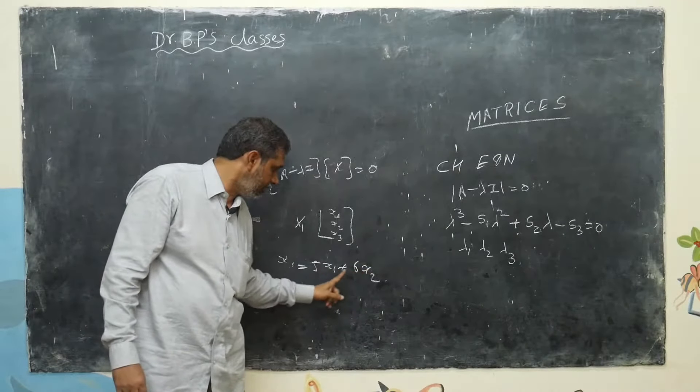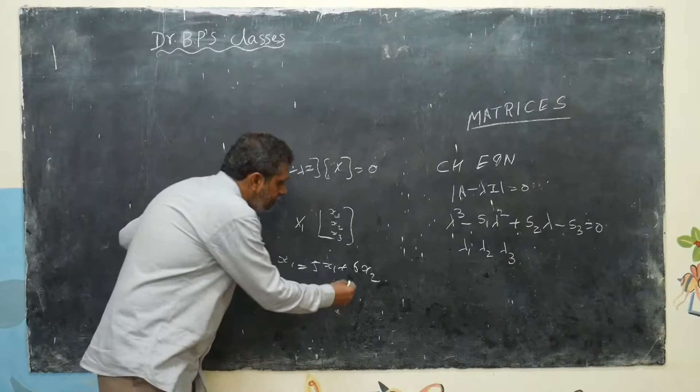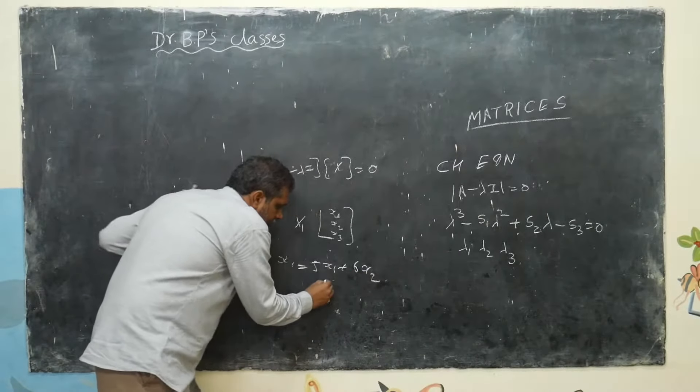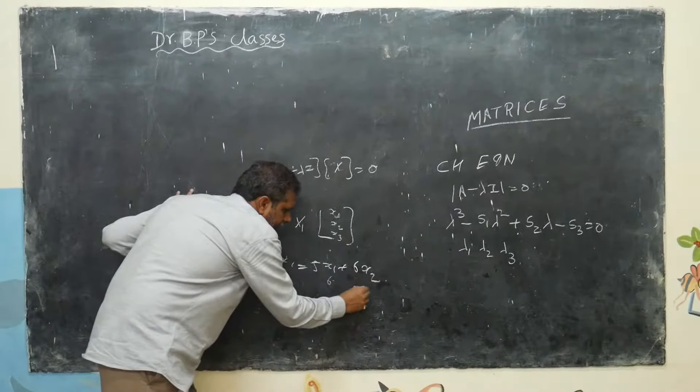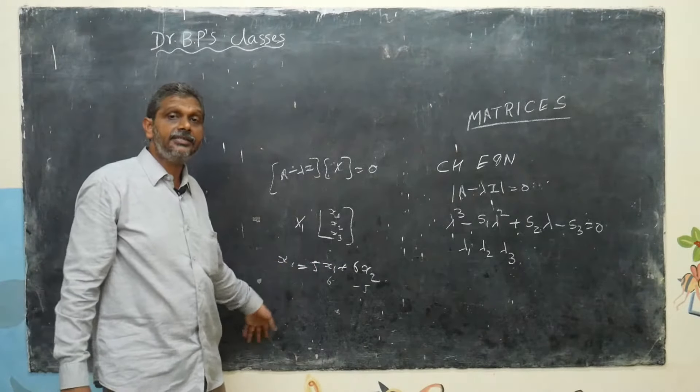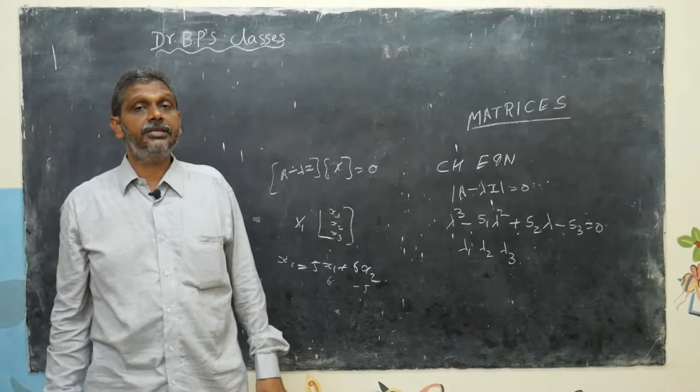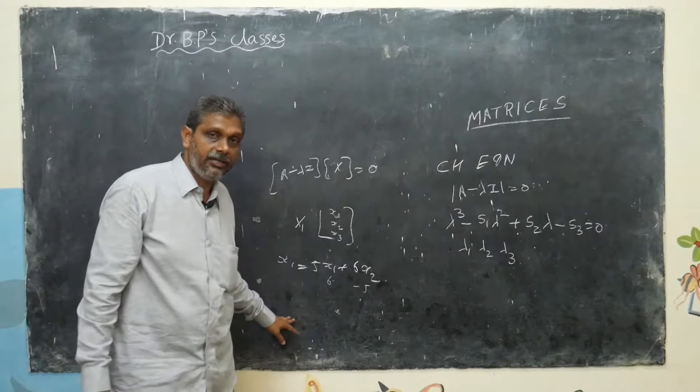Sorry, x2 is 6, x3 is 5. Then minus you can take - x1 zero, 6 you can take, this minus 5. Obviously, what you will get? Zero. Such a way you will get three cases are same. This is in finding eigenvalues and eigenvectors.